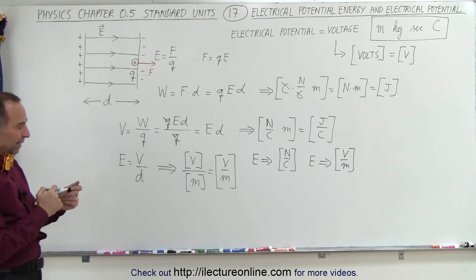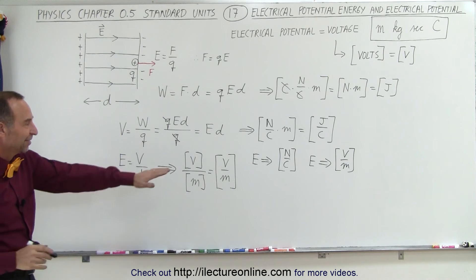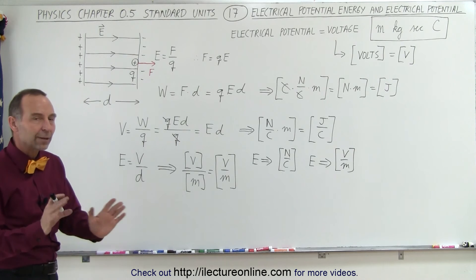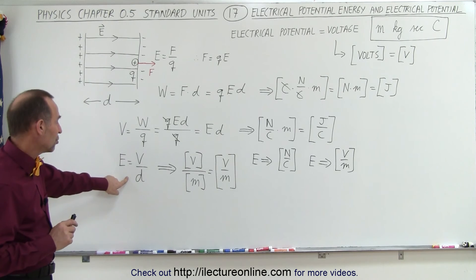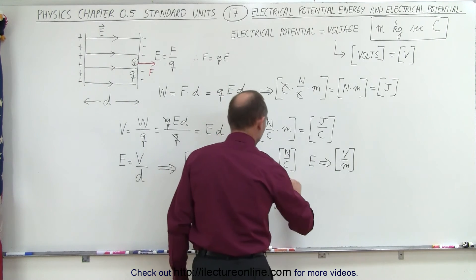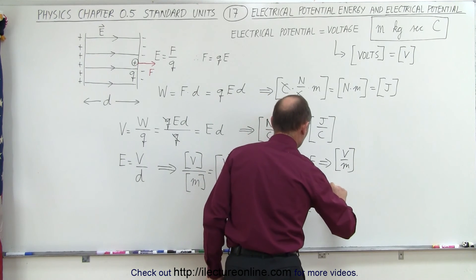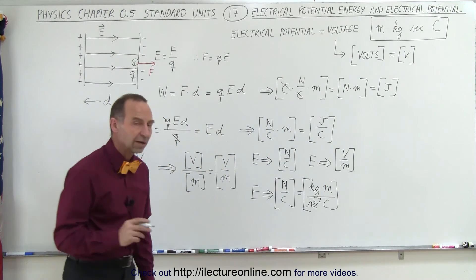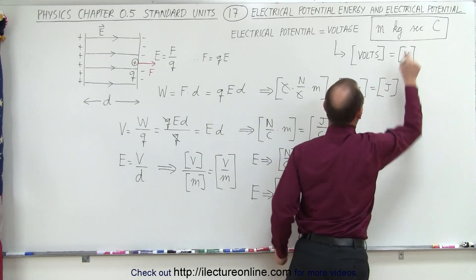Now let's find the basic SI units for the electric field. Starting with newtons per coulomb, we can express newtons in terms of kilograms times meters per second squared. So the standard SI units for the electric field become kilograms times meters per second squared, divided by coulombs — using all four base units: meters, kilograms, seconds, and coulombs.